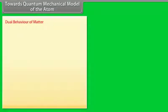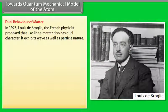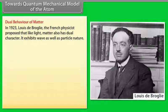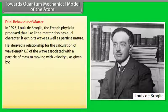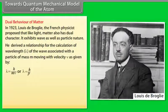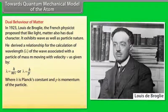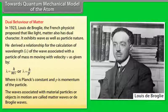Towards the quantum mechanical model of the atom: Dual behavior of matter. In 1923, Louis de Broglie, the French physicist, proposed that like light, matter also has dual character — it exhibits wave as well as particle nature. He derived a relationship for the calculation of wavelength lambda of the wave associated with a particle of mass m moving with velocity v, given by lambda equals h divided by mv, or lambda equals h divided by p, where h is Planck's constant and p is momentum of the particle. The waves associated with material particles in motion are called matter waves or de Broglie waves.